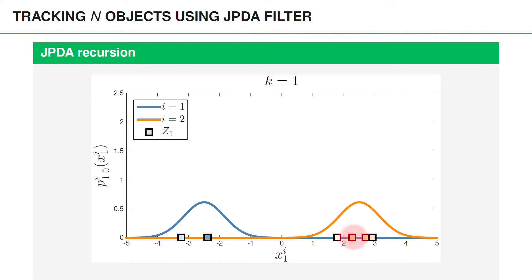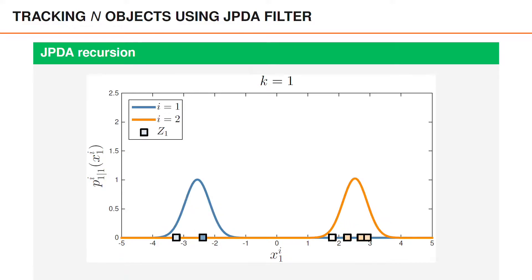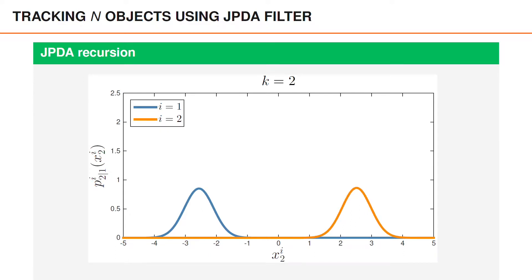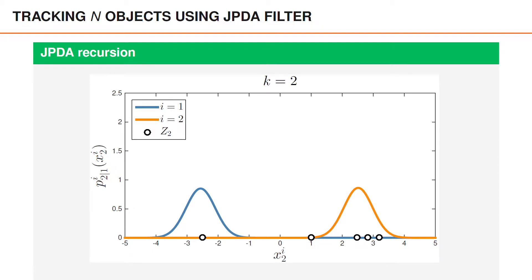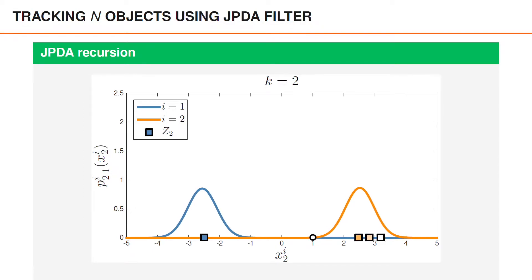The four measurements on the right are colored similarly. After the merged update, we get the posterior densities shown here. Next, we predict to time two. There are five measurements at time two. We compute the marginal association probabilities, and then we compute the merged update. This illustrates the basic JPDA recursion. In each time step, we predict, compute the marginal association probabilities, and then use them to perform a merged update.